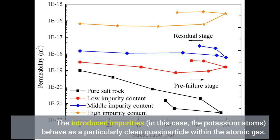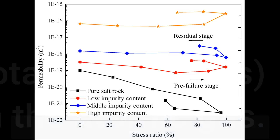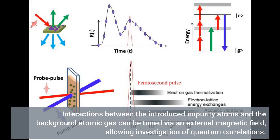The introduced impurities, in this case the potassium atoms, behave as a particularly clean quasiparticle within the atomic gas. Interactions between the introduced impurity atoms and the background atomic gas can be tuned via an external magnetic field, allowing investigation of quantum correlations.